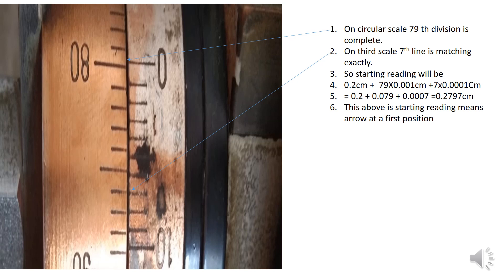On the circular scale — similar to a Vernier scale — zero is here, so we can say 79 is complete, between 79 and 80. So the 79th division is complete on the circular scale. On the third scale, the 7th line is matching. The starting reading, converted to centimeters, is 0.2 centimeter for the main scale reading, and we write everything in the same units.